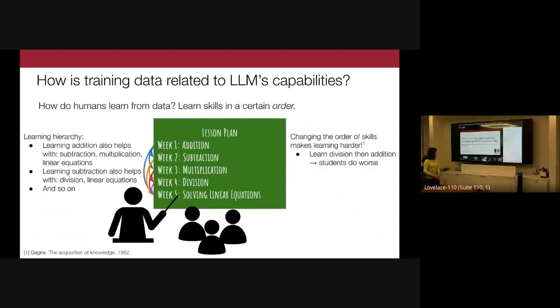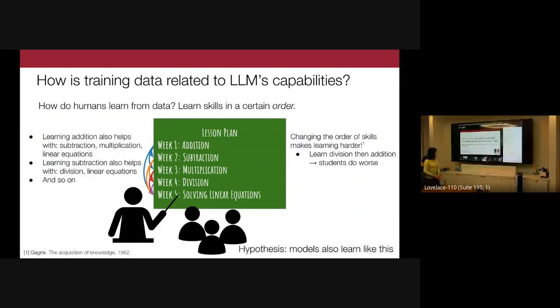These researchers found that when they changed the order in which skills were learned, students tended to retain them far less, suggesting there's a natural hierarchy of information that induces an order in which humans best learn. A potential hypothesis is that models also learn like this — that there's an ordering over skills the model learns best from. This idea is essentially curriculum learning, which has been around for quite a while.